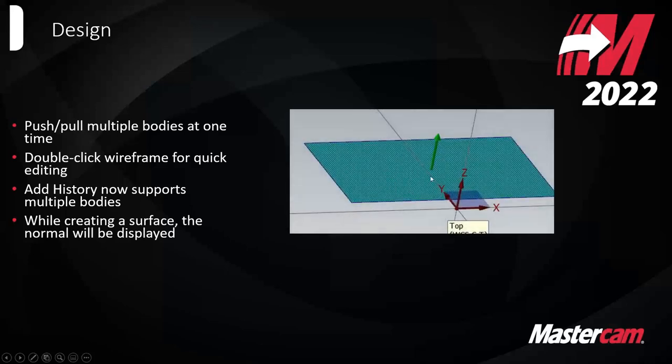When you create surfaces now, the normal will be displayed. It happens when you hover over the surface. Before when you created a surface, you'd have to immediately hop out to see where the normal is and go change orientation. Now you can just hover over the surface, it'll show you the direction of the arrow, and you can flip it right there as you're creating it.